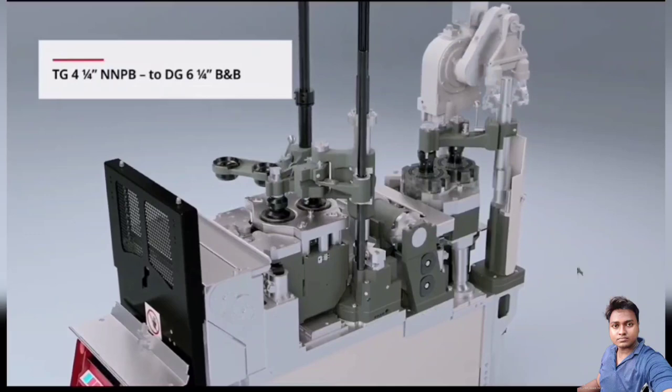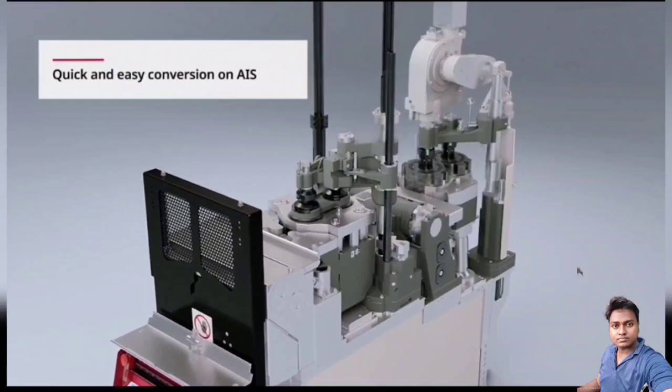TG four quarter NNPB to DG six one fourth blow and blow conversion. Quick and easy conversion on AIS.